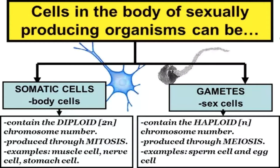An important concept: cells in the body of sexually reproducing organisms can be either somatic cells, which we consider body cells, and can be considered diploid. Remember from the prefix sheet — also available on the Sakai site — that the prefix 'di' means two, so diploid has a double chromosome number. This is produced through the process of mitosis, as we spoke about in the last module.